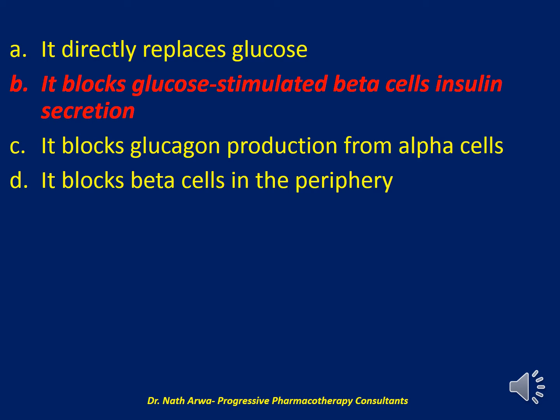Octreotide is a subcutaneous, semi-synthetic, long-acting analog of somatostatin, and it acts by blocking glucose-stimulated beta cell insulin secretion. Instead of glucose infusion, octreotide can be administered at doses of 50 mcg subcutaneous every 6 hours to manage such emergencies. Monitor the patient for hypoglycemia 24 hours after the last octreotide dose. Common adverse effects include injection site pain, nausea, bloating, and diarrhea.